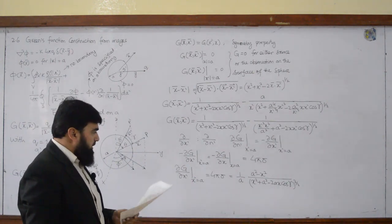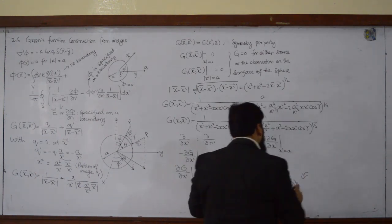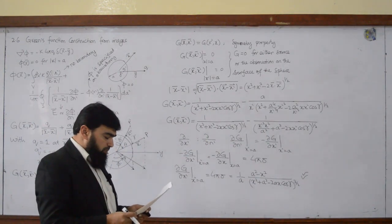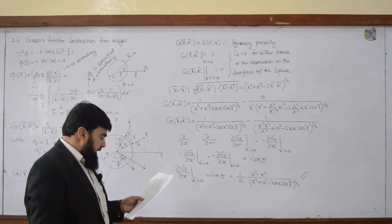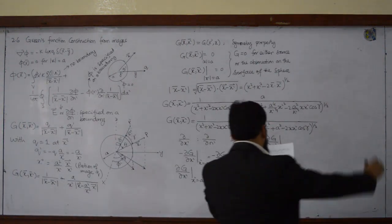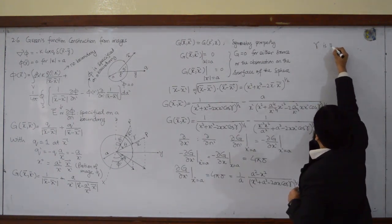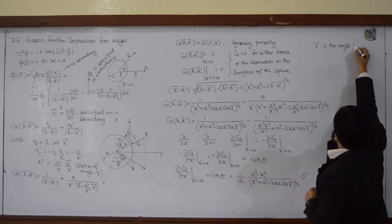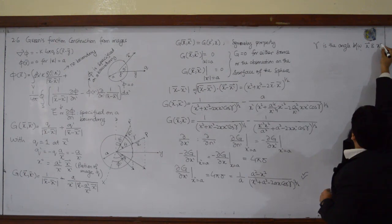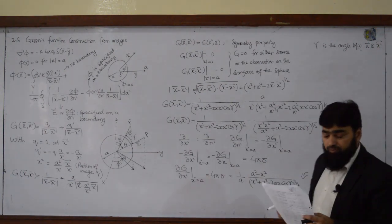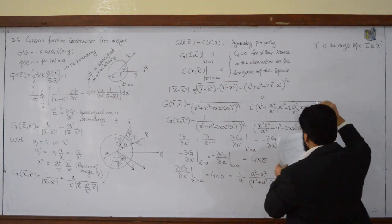It is symmetrical and you should derive this — just 3 or 4 steps and you will be able to derive it. For gamma, I can write that gamma is the angle between x and x prime.